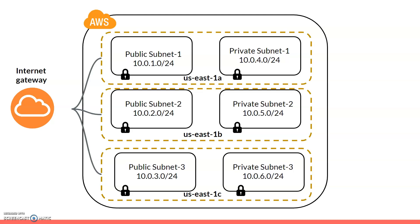We have three public subnets and three private subnets. We also created one internet gateway. In addition to the internet gateway, we created a routing table — specifically a public routing table — which has a mapping with all public subnets. The routing table has route rules so all traffic from any source goes to the internet through the internet gateway.